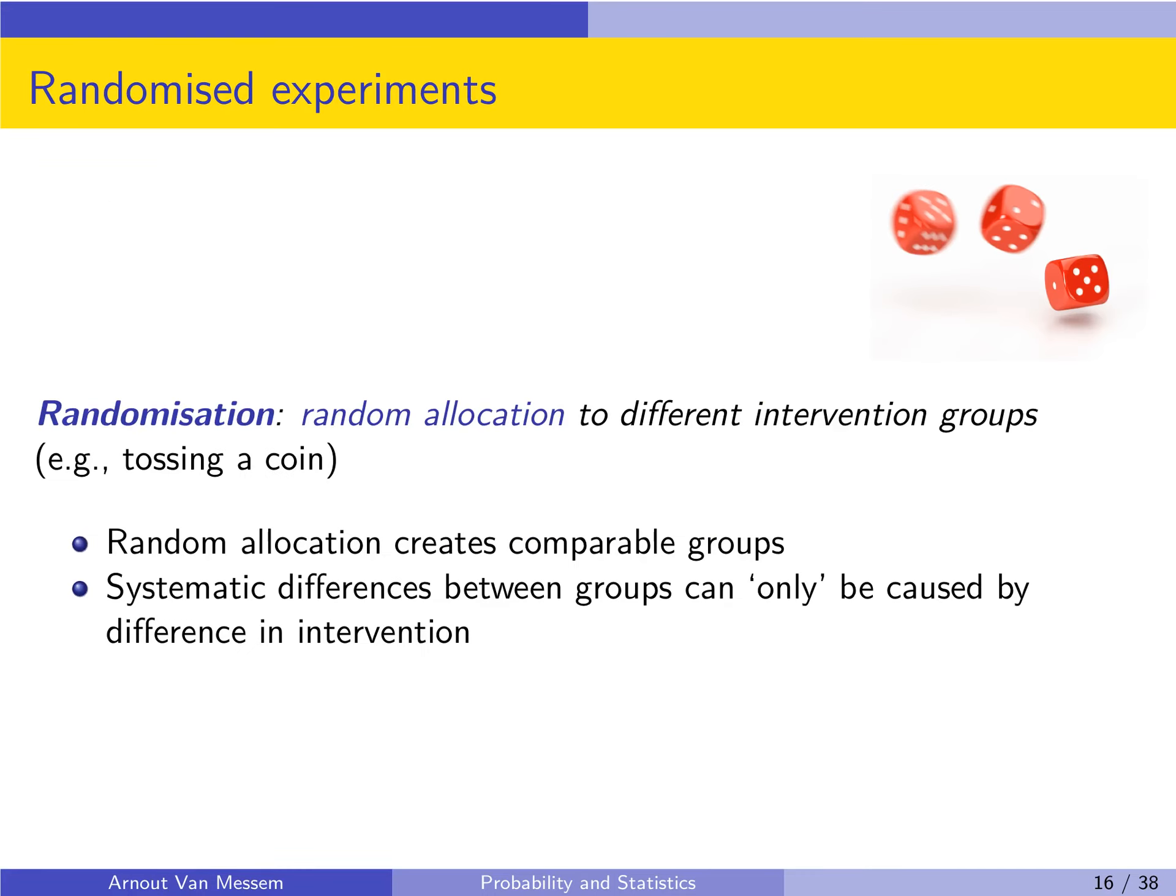Randomization or random allocation will attribute a subject to one of the groups completely at random. So it means you cannot predict beforehand who will end up in which group. Theoretically such random allocation will create comparable groups. The only systematic differences between the groups can then be caused by the intervention. So if you see a difference between group A and group B, and you have created the groups as comparable as possible, then you know that this difference has to be because of the intervention that you did in your experiment.